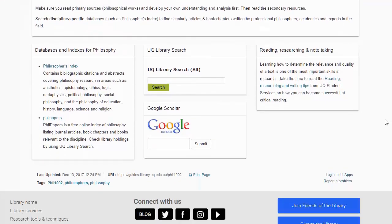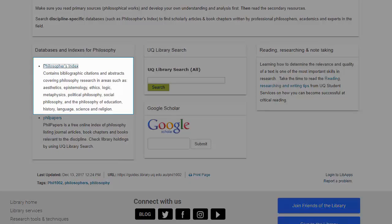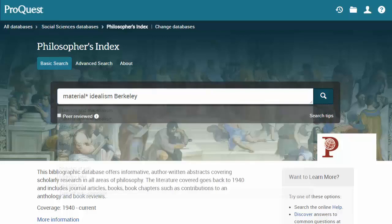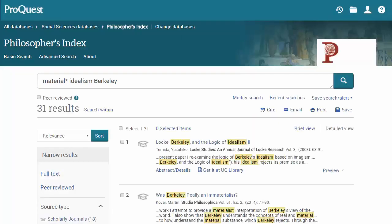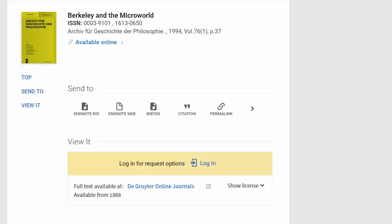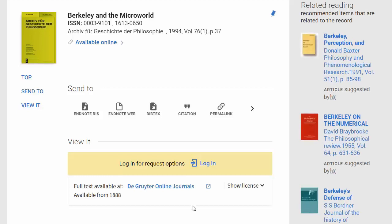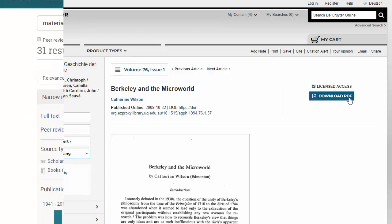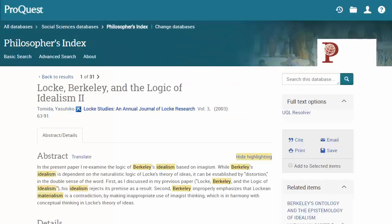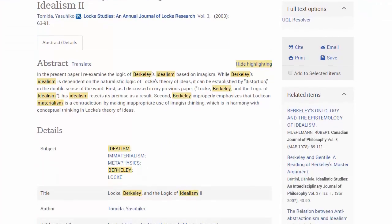Here's an example of a basic search done in Philosopher's Index. Enter Material with an asterisk, Idealism, Berkeley. To access the full text, click on the Get It At UQ Library link. When you find an article you like, it's always a good idea to click on the title and look at the subject headings assigned to it. You can also search with these.